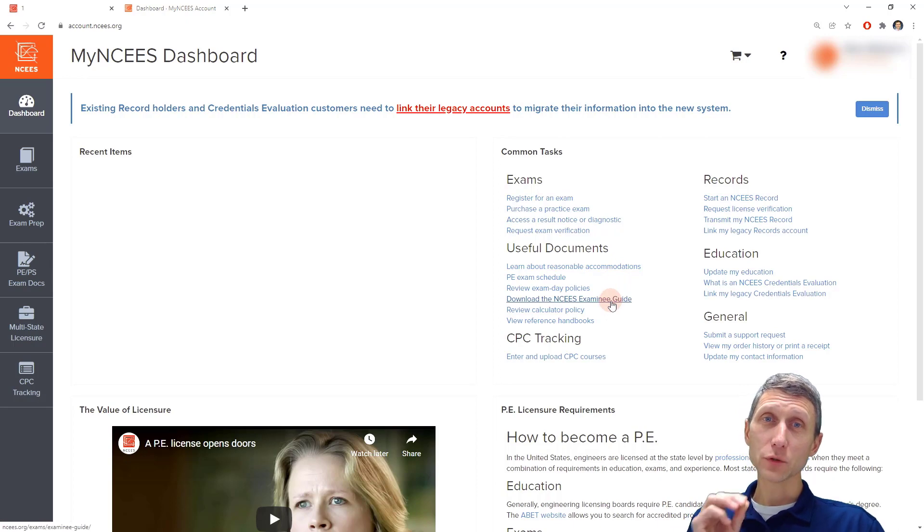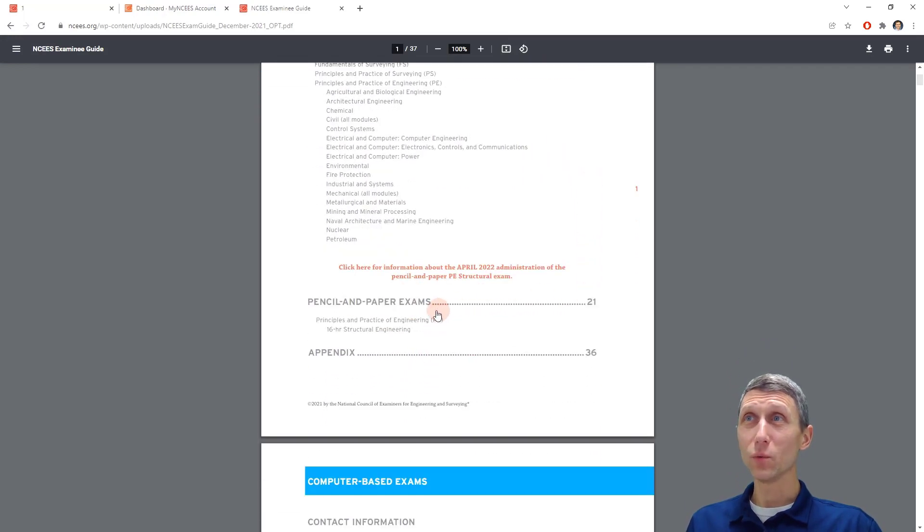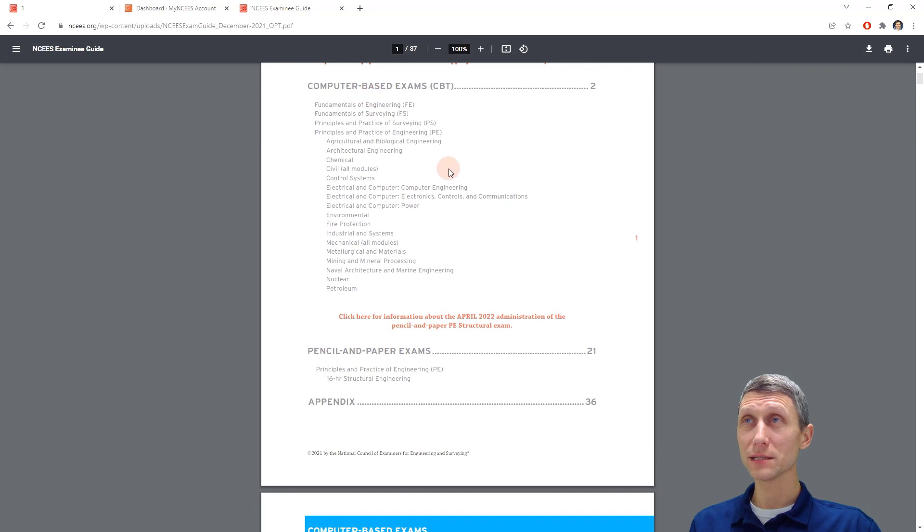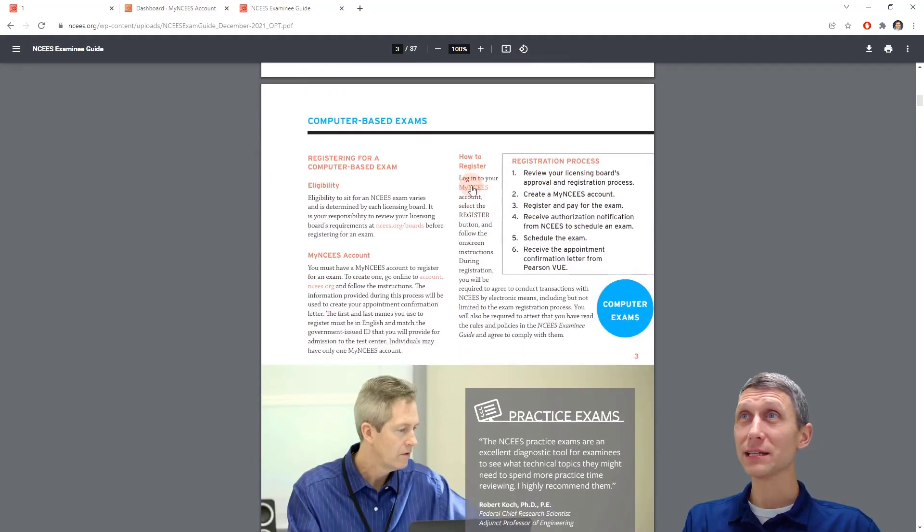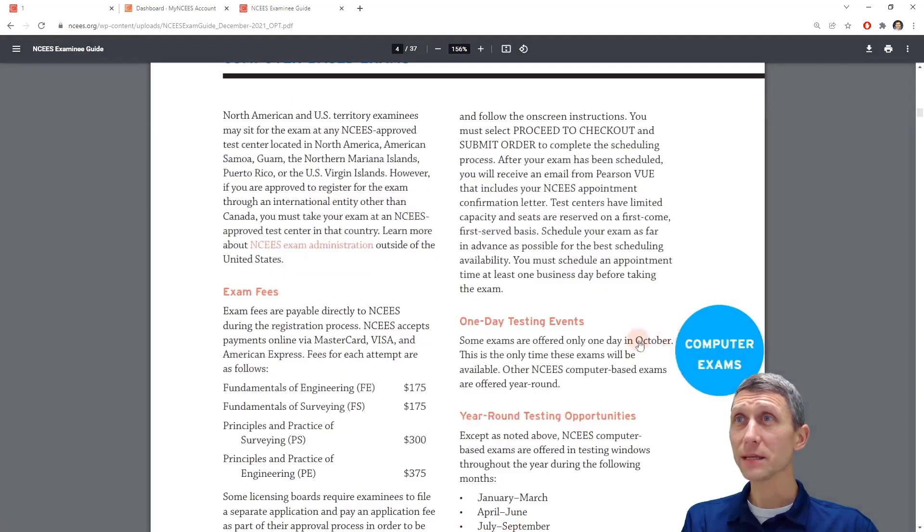If we go to my NCEES, I've created an account here already, just kind of a blank account, but this is where you register and you keep your records. You can see here the common tasks like register for an exam. That's something that you'll need to do eventually. You want to do that a couple months out. Last year they were way out there, scheduled way out just because of COVID and that sort of thing. You can purchase practice exams directly from NCEES. I've heard from some of my students that's a great document. There's two things that I want to point out. The first is the exam e-guide.